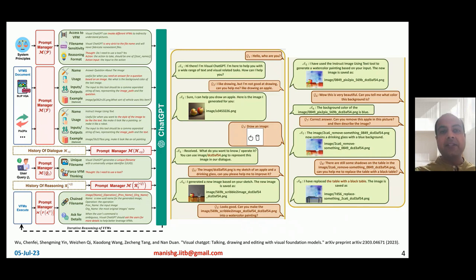The prompt manager has to manage several kinds of prompts before giving it as input to ChatGPT. For example, it must manage basic system principles. It must motivate the ChatGPT model to not use its autoregressive thinking but actually invoke different visual foundation models. It must also tell ChatGPT to be very sensitive to file names. It must tell ChatGPT to follow appropriate reasoning formats so that ChatGPT comes up with the appropriate action and the right inputs for the next visual foundation model. The prompt manager also must give the right commands to ChatGPT about the capabilities of the 22 visual models it has, their names, how to use them, and their input-output formats.